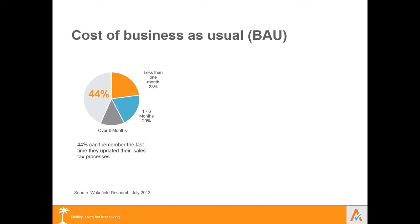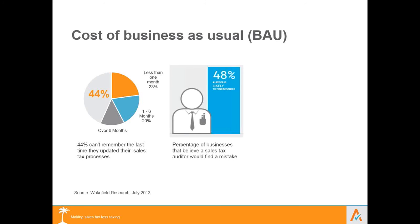Research from Wakefield Research conducted in July 2013 looked at the cost of doing business as usual. Among mid-market to enterprise businesses, 44 percent of companies cannot remember the last time they even looked at their sales and use tax processes. Many companies focus on it when setting up an ERP system but rarely revisit it after that. More interestingly, 48 percent of businesses believe that if an auditor came in, they would very likely find a mistake.